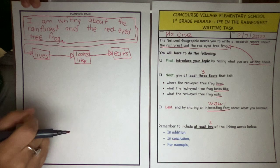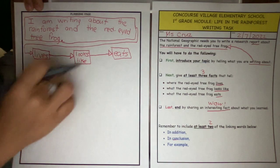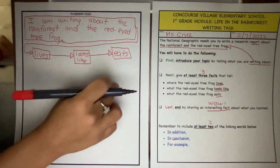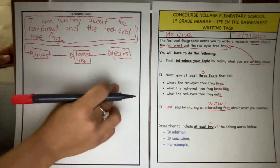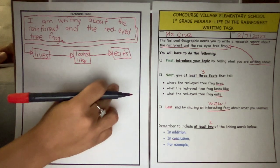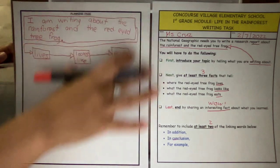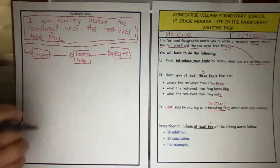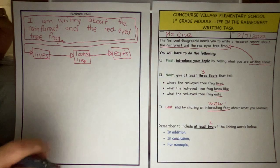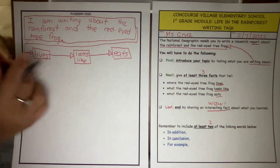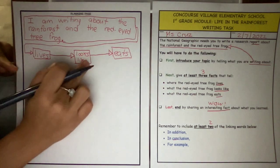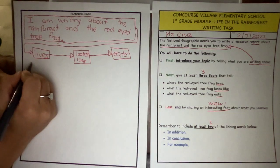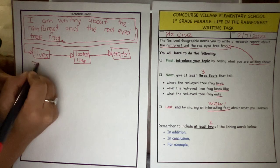Now use your article to write where does it live, what does it look like, and then what does the animal eat. I suggest that you have your article right next to you in order to help you write down the information. Go ahead and get started. So think about where it lives. When you are writing, do not go under the other box.